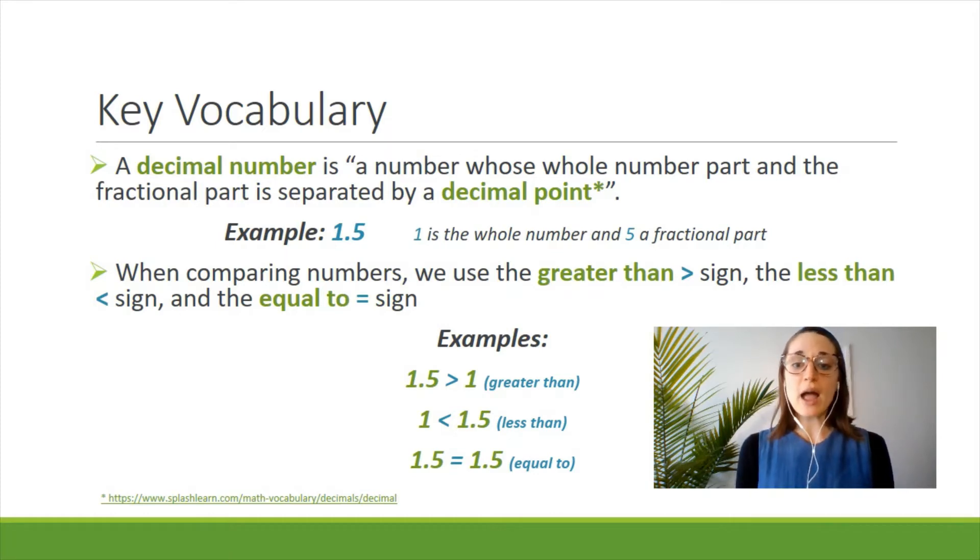So if I write out 1.5 and 1, between them I will put the greater than symbol and I read it like a sentence: 1.5 is greater than 1. If I reverse their order, I would reverse the symbol too and read it as 1 is less than 1.5. If two numbers are equal in value, I can use an equal sign between them, like 1.5 equals 1.5.